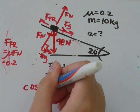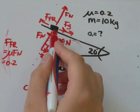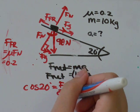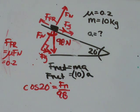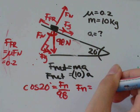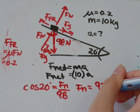So cosine of 20 degrees, the adjacent side Fn, over the hypotenuse which is 98. So in my calculator, I'm just going to go cosine of 20 degrees, and I get that's equal to about 0.94. And then I'll multiply by 98, and I get Fn is approximately equal to 92 Newtons.